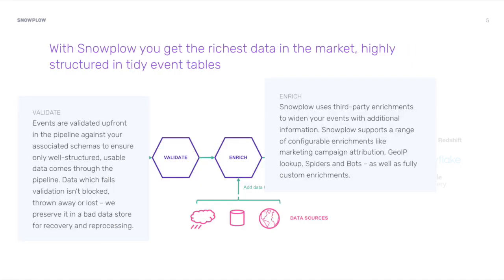Once collected, the events are validated up front in the pipeline against their associated schemas. You can author your own schemas, essentially creating your own event and entity definitions for your events to be validated against. This guarantees only highly structured events make it through the pipeline, ensuring that the data is clean and structure is highly expected, so building models requires little data preparation.